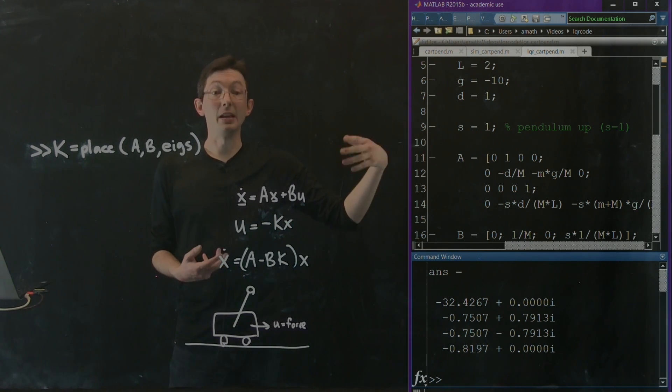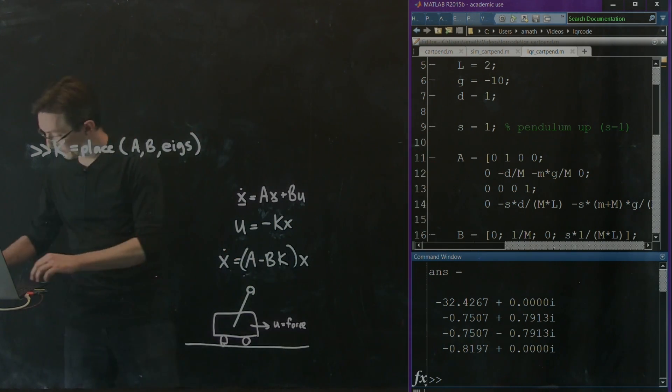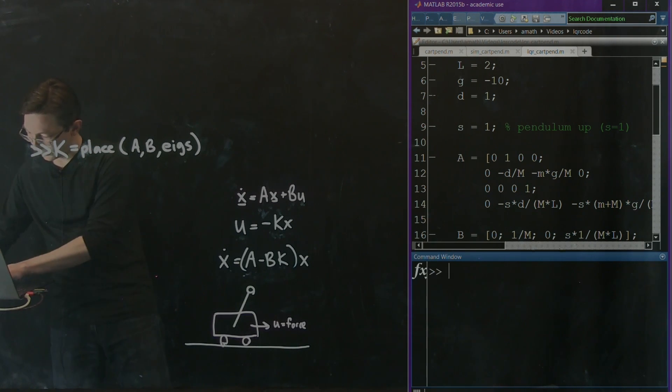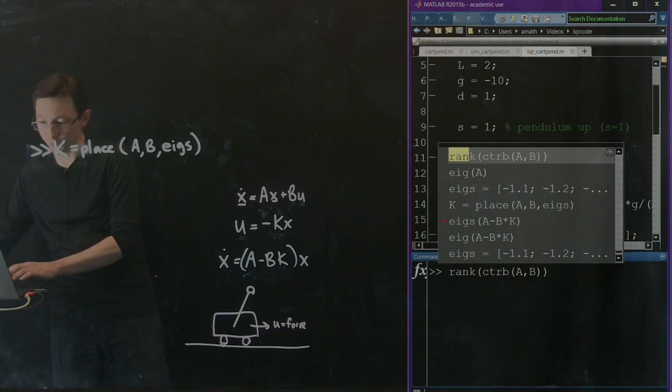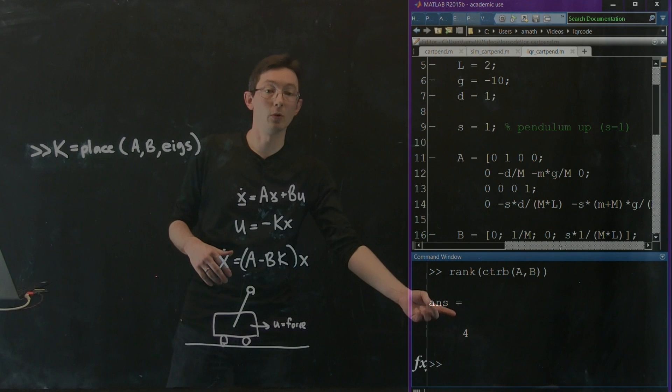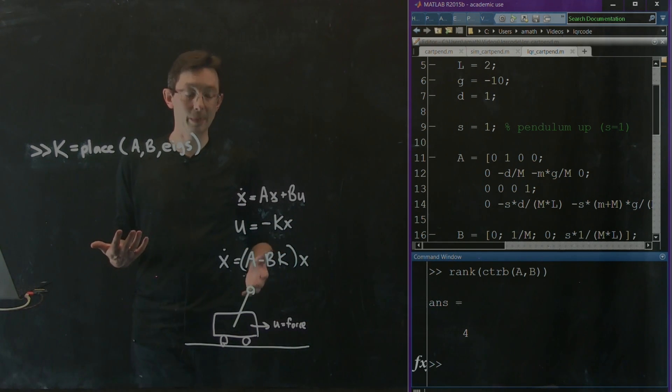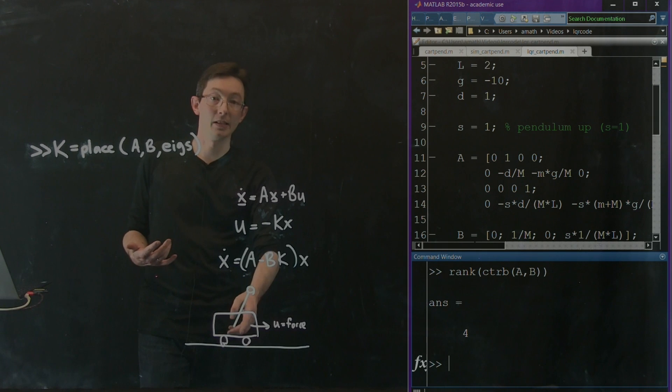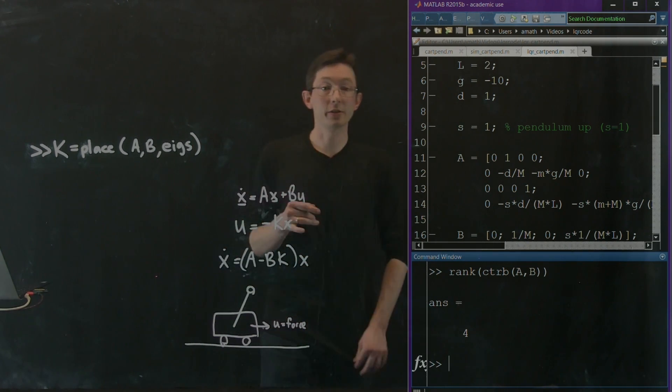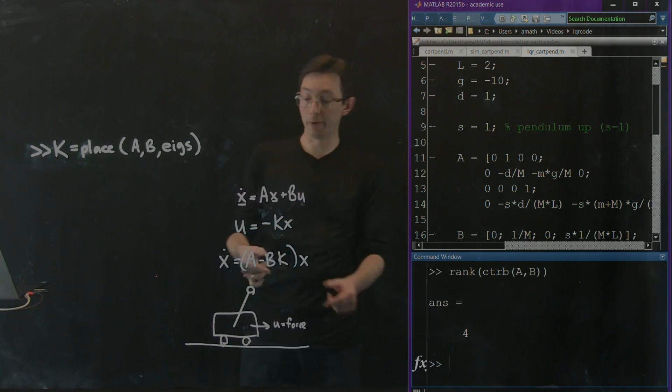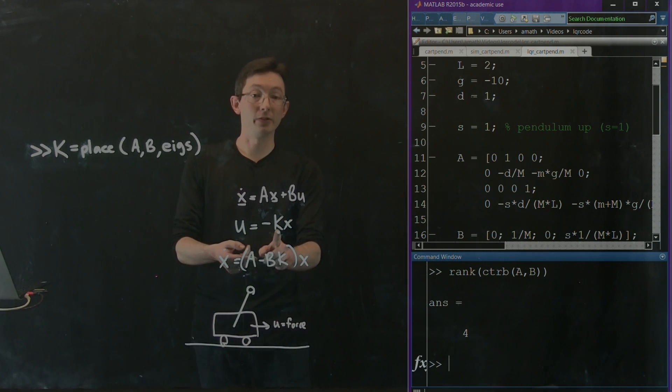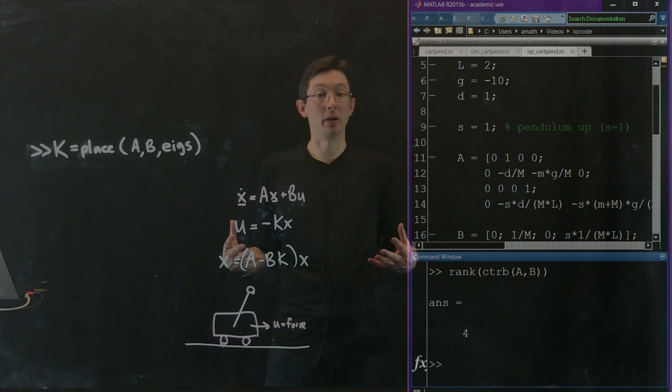We've checked that the system is in fact controllable. So if I look at the rank of the controllability matrix, it has dimension four. So it spans the four-dimensional state space of the position and velocity of both the cart and the pendulum. And then we've also shown that since the system is controllable, I can design a full state feedback u equals minus kx so that I can place the eigenvalues of the closed loop system anywhere I want.